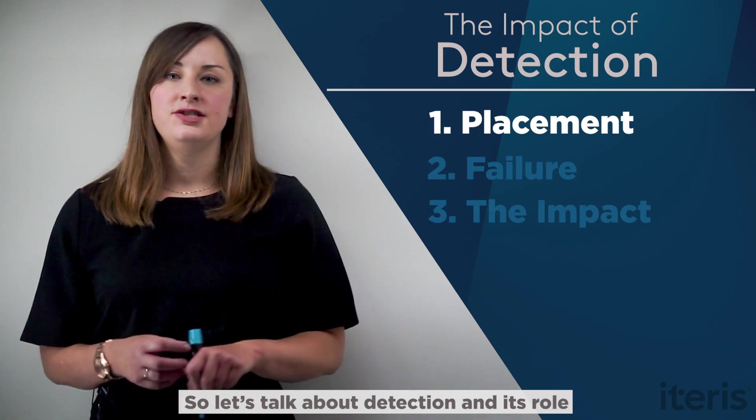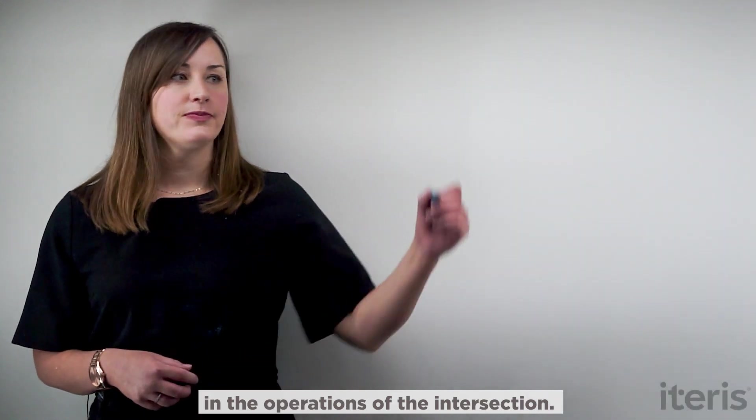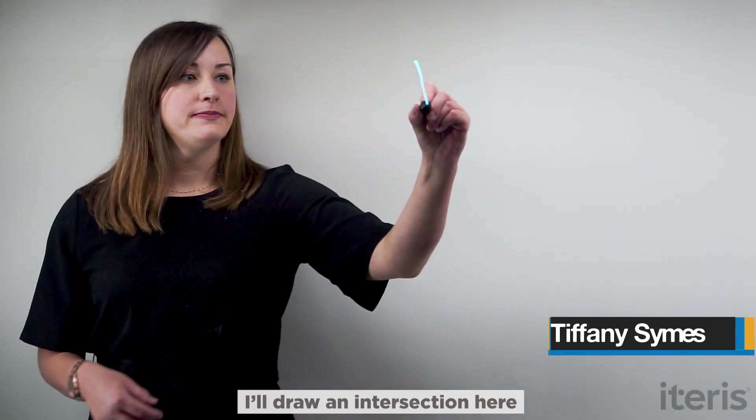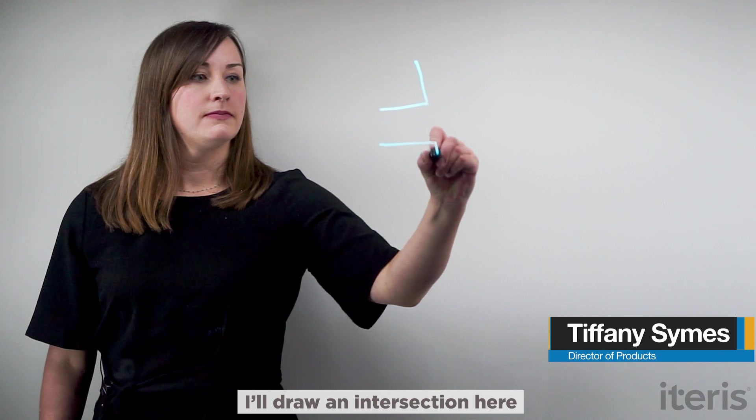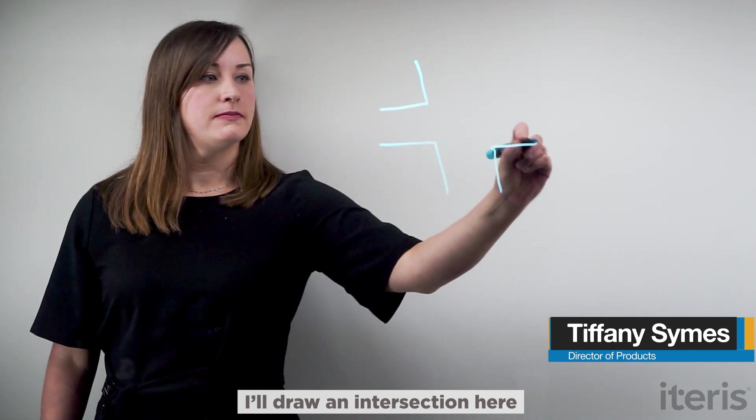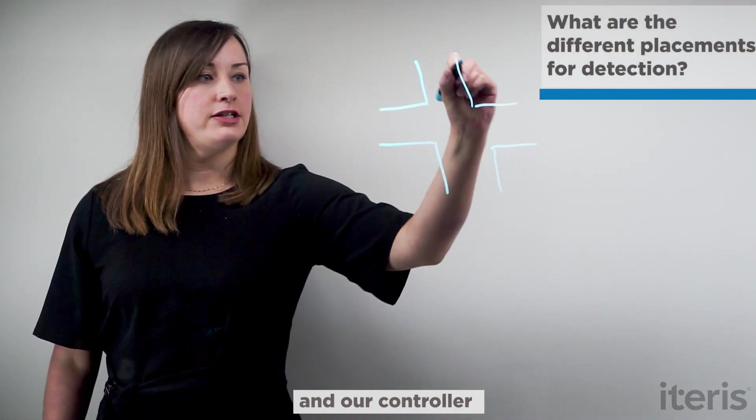So let's talk about detection and its role in the operations of the intersection. I'll draw an intersection here and our controller.